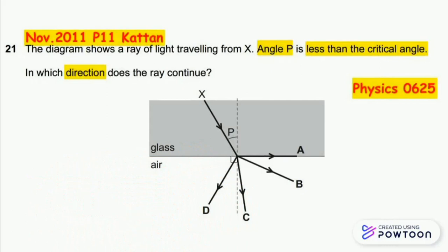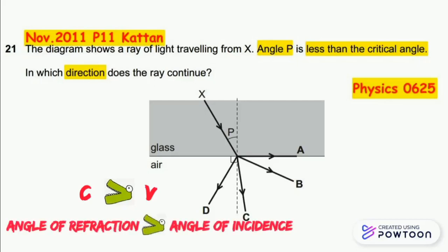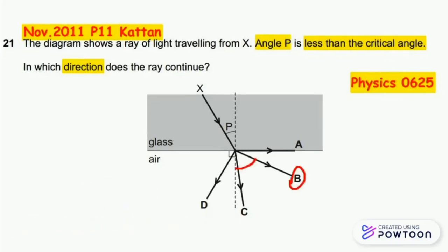The speed of light in air is more than the speed of light in glass. As a result, the angle of refraction in air is more than the angle of incidence in glass. Finally, the refracted ray exits the glass away from the normal.